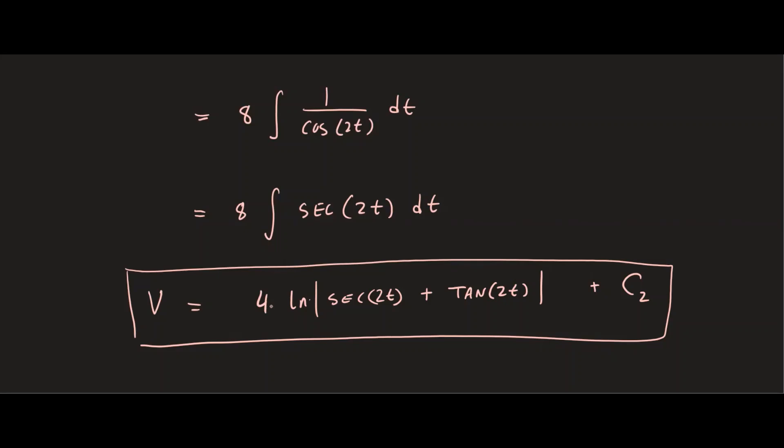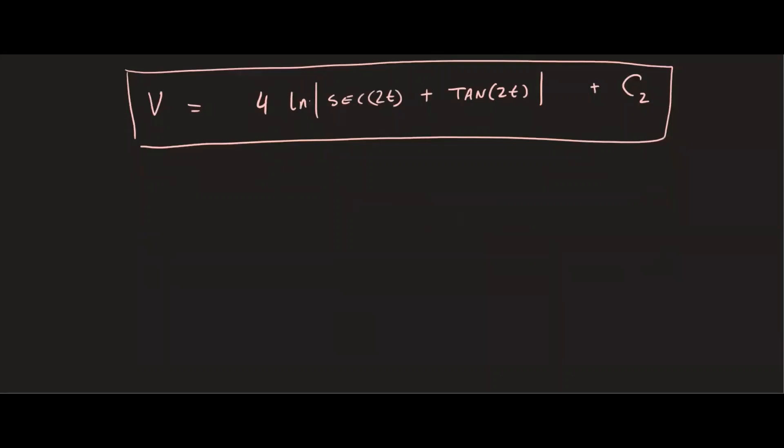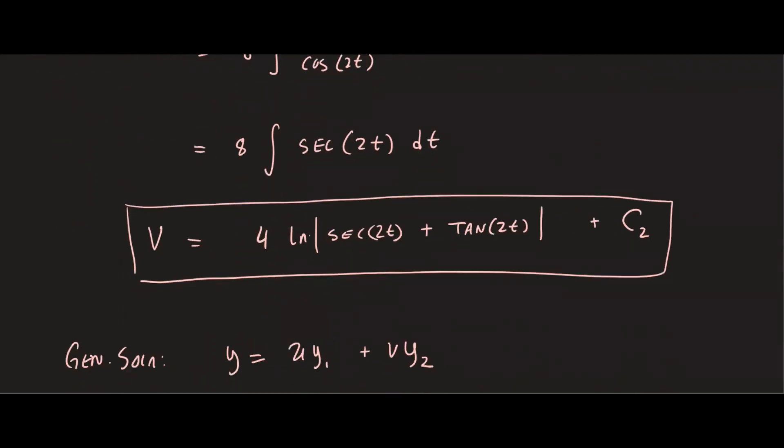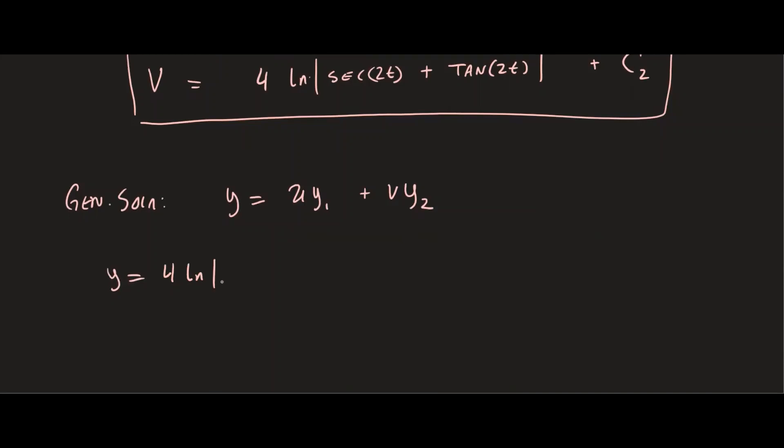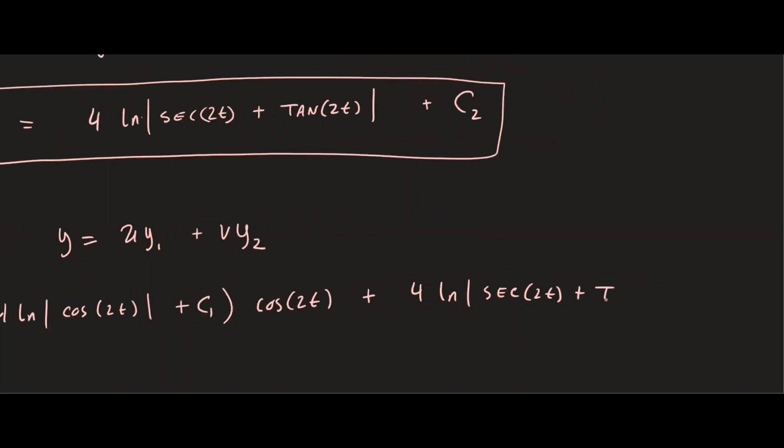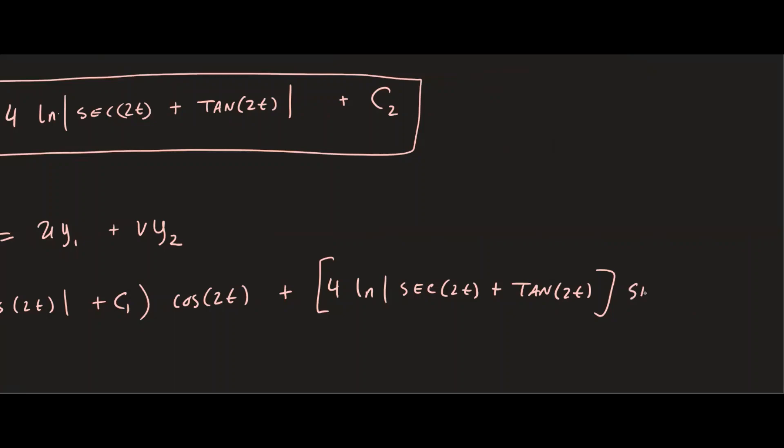Okay, so now if we put all of this together, we have our general solution. The general solution we said is y equals u times y1 plus v times y2. So y equals u, which is 4 ln of cosine 2t plus c1 times y1, which was cosine 2t, plus v, which we just found, that's 4 ln secant 2t plus tangent of 2t, all of it times y2, which was sine of 2t.